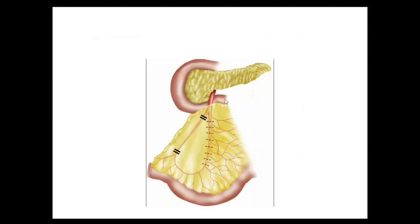Releasing the DJ (duodenojejunal) flexure and other maneuvers increase the length of ileum reaching the pelvic floor. The standard rule is that the pouch should reach freely beyond the symphysis pubis by at least two to three centimeters to ensure a tension-free anastomosis. If the J-pouch is not reaching despite all maneuvers — release of mesentery, ligation of the terminal ileocolic vessel at its base, dividing the mesentery transversely over the SMA and branches, and release of the DJ flexure — then convert to an S-pouch.